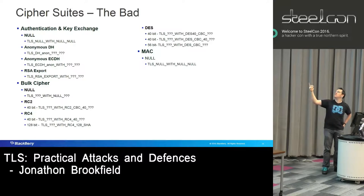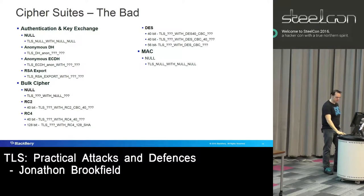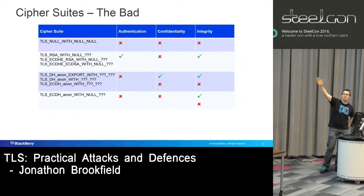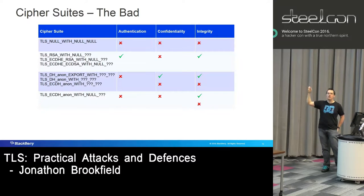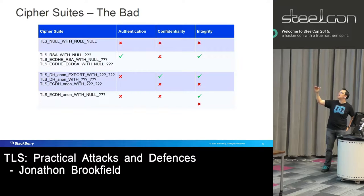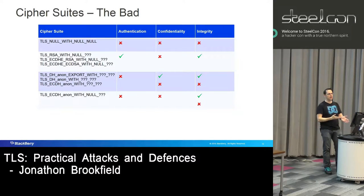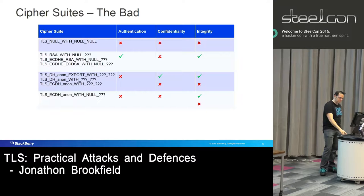On the MAC side, there is only one cipher that doesn't do integrity protection, and that's the null cipher. So putting all of that together, these are the really bad cipher suites. The anonymous Diffie-Hellman and anonymous elliptic curve cipher suites depend on the type of attacker you are — if you're a passive attacker you get confidentiality, but if you're an active attacker you don't. That is just whether you're listening with Wireshark or whether you're actively intercepting.